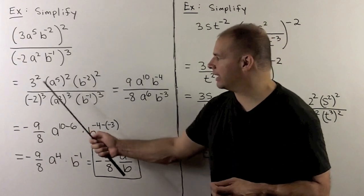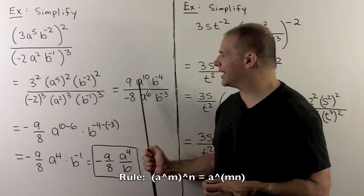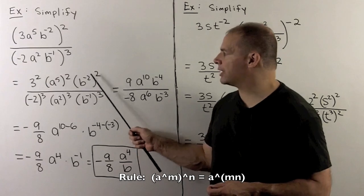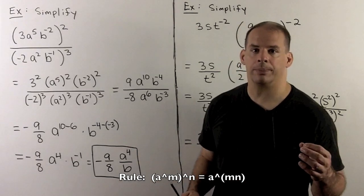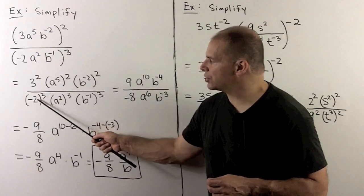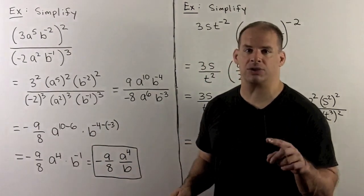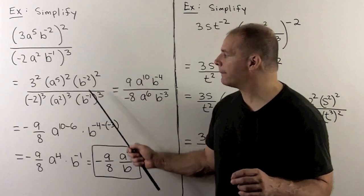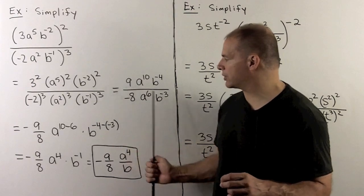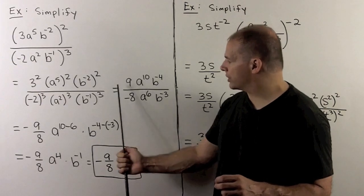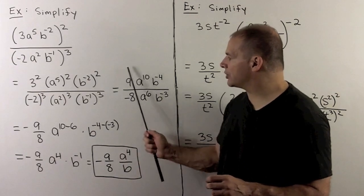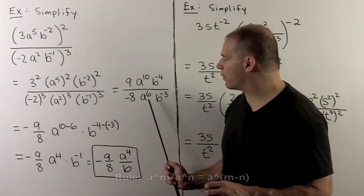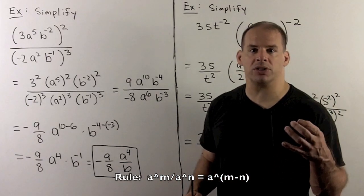Applying the power rule: three squared is nine, a to the fifth to the second power — multiply the exponents — gives a to the ten, b to the minus two squared is b to the minus four. In the denominator, minus two cubed is minus eight, a squared cubed is a to the sixth, b to the minus one cubed is b to the minus three. Collecting constants gives minus nine over eight. For the a terms, a to the ten over a to the sixth gives a to the four.